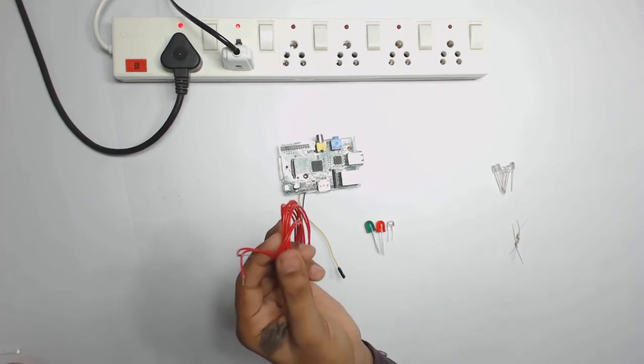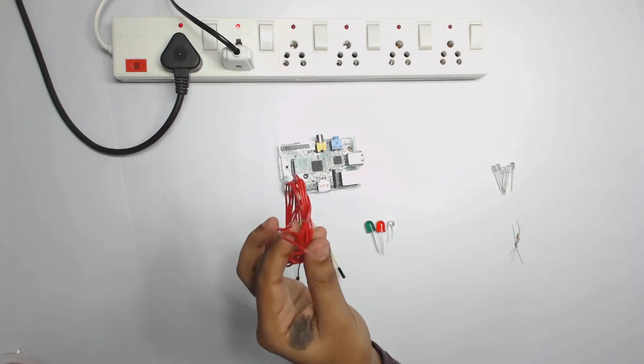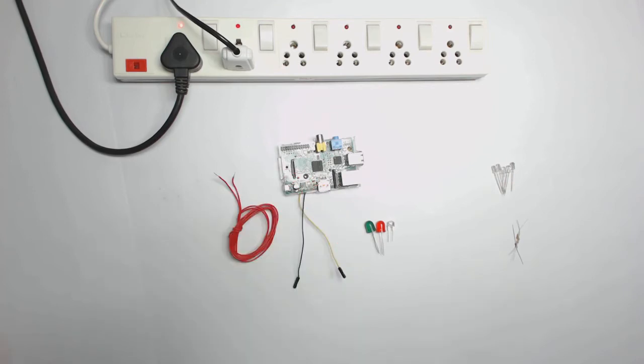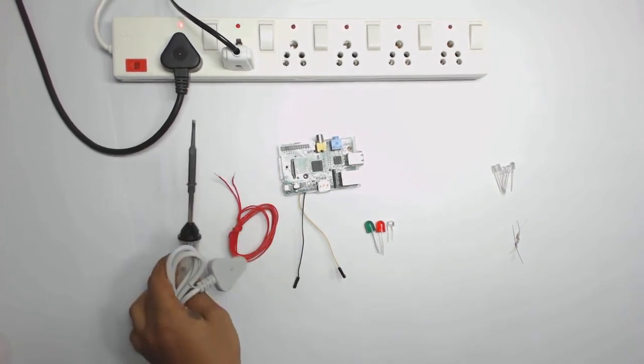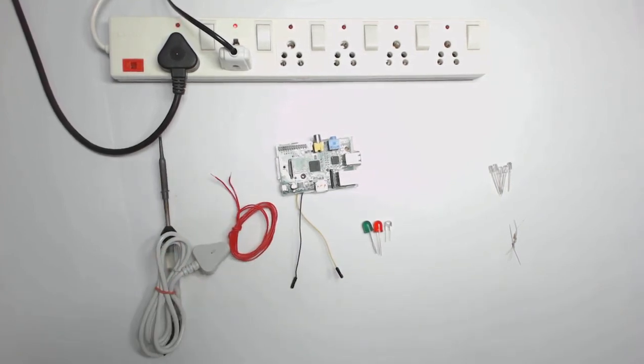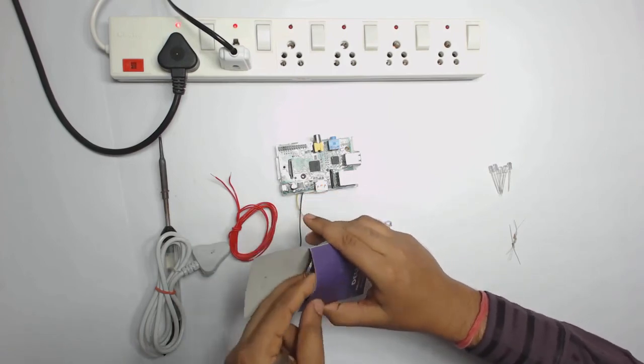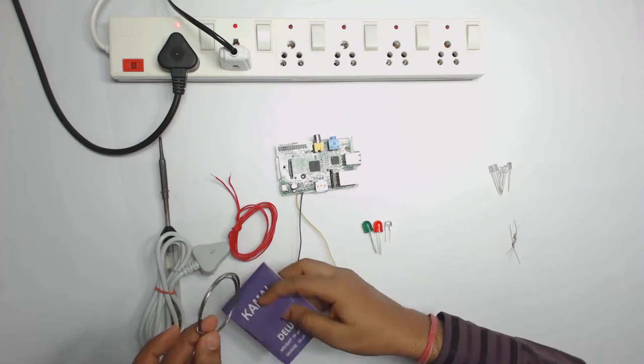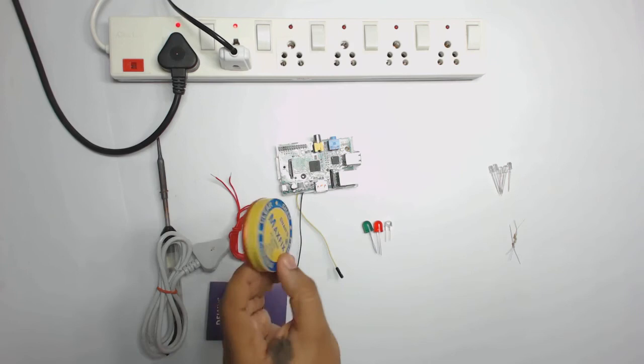The third item we require is a single metal wire to solder the LED. Around 5 meters is enough. We would also require a soldering iron with solder wire and flux.